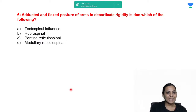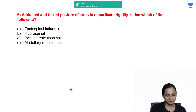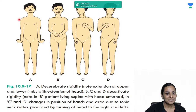Next: an adducted and flexed posture of arms is seen in decorticate rigidity. Which of the following tracts is responsible — tectospinal, rubrospinal, pontine reticular spinal, or medullary reticular spinal? The correct answer is the rubrospinal tract.